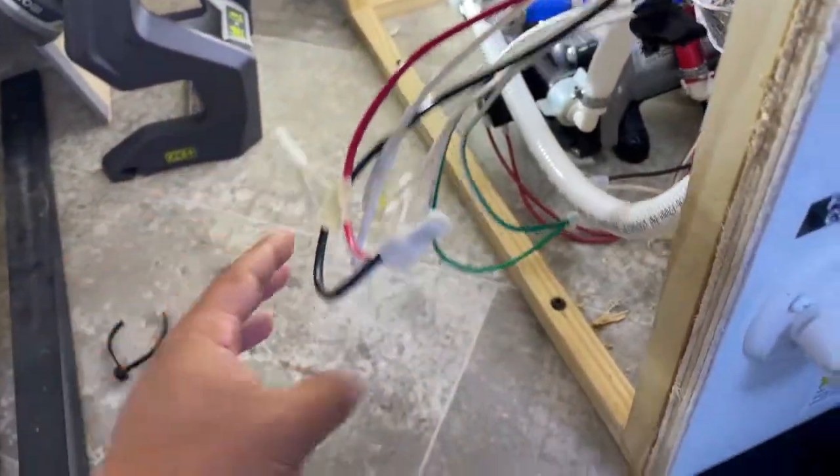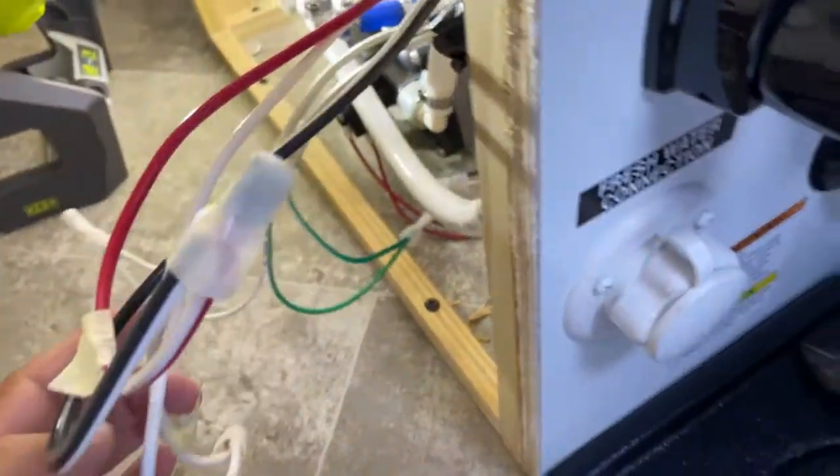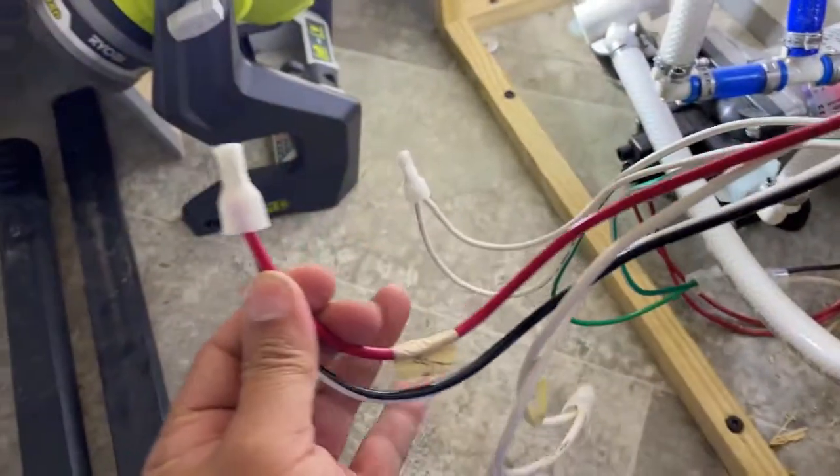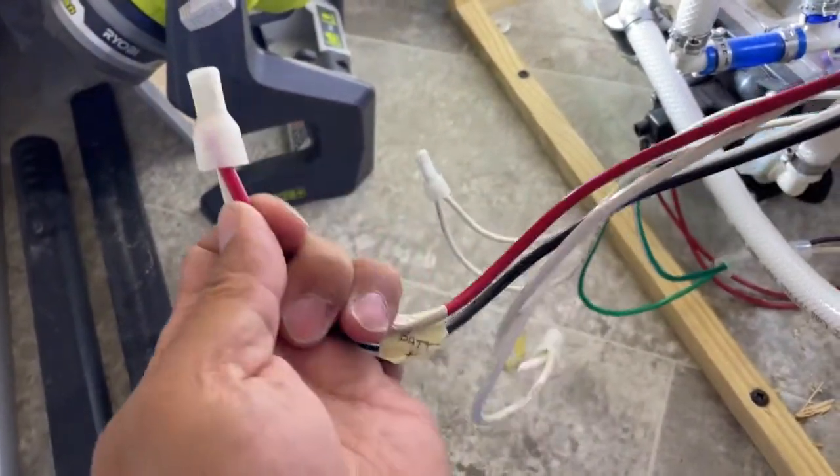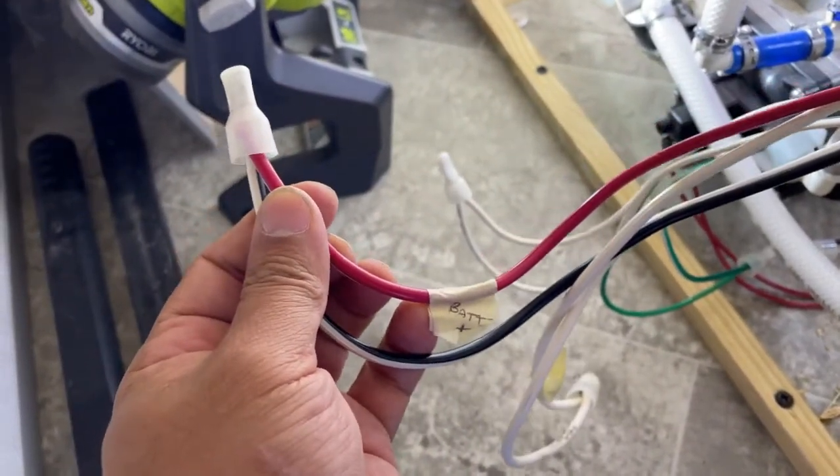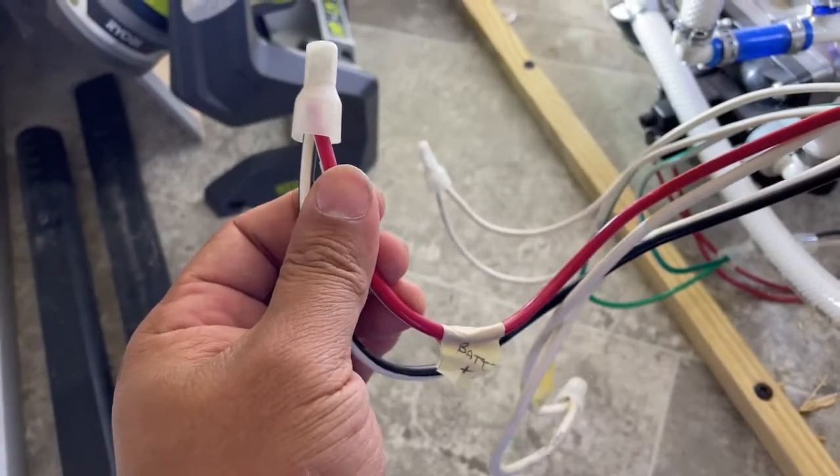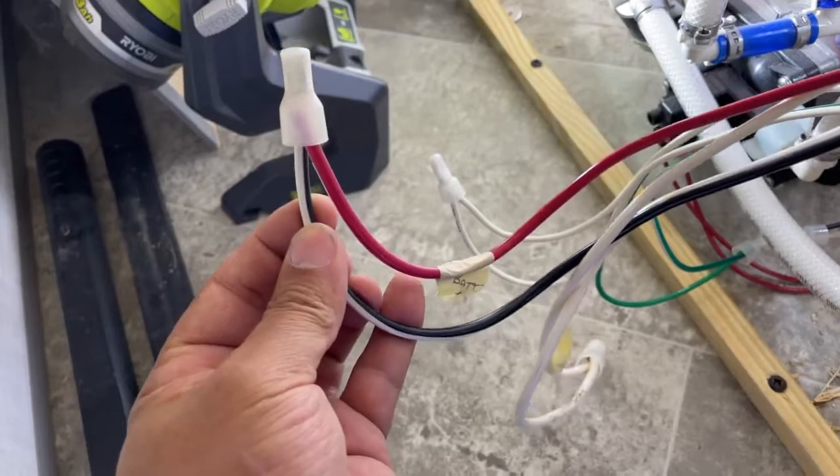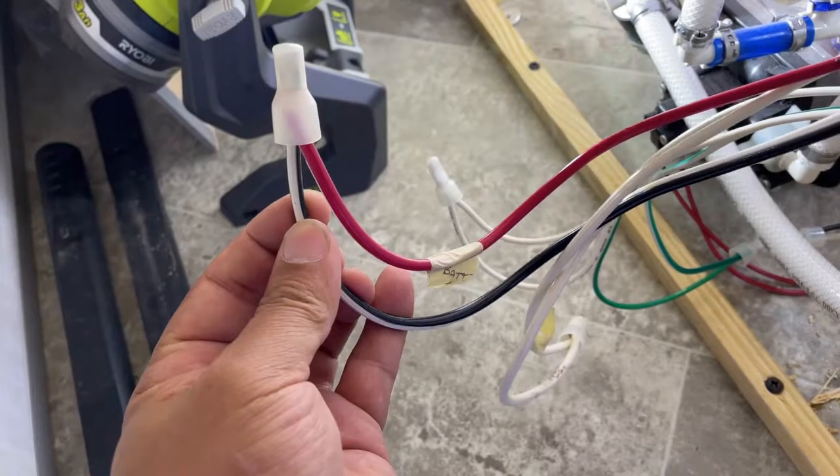And you can label those. Once you've labeled them, then you'll know which wire goes to what. On this positive side in the harness, there was actually three wires running into this. There was a battery wire, and then there was a solar positive wire that was running into this same thing. And then this black wire, which is the incoming wire.